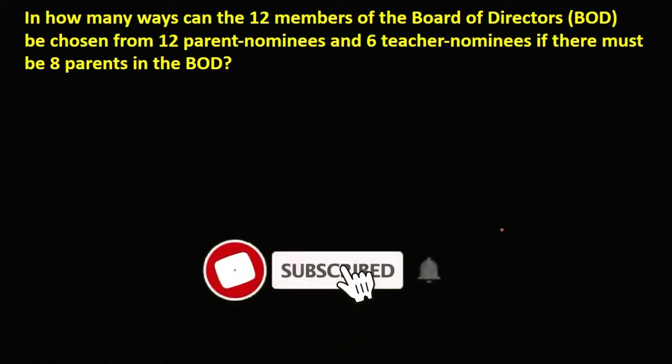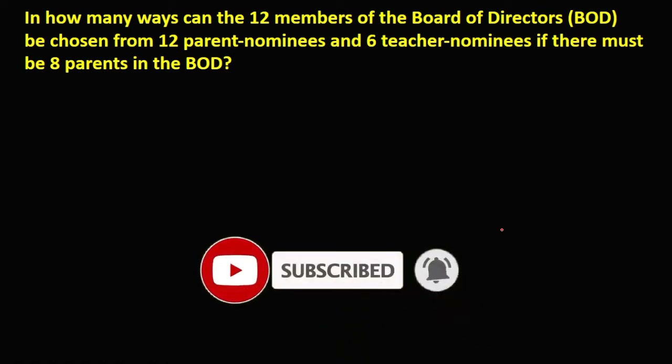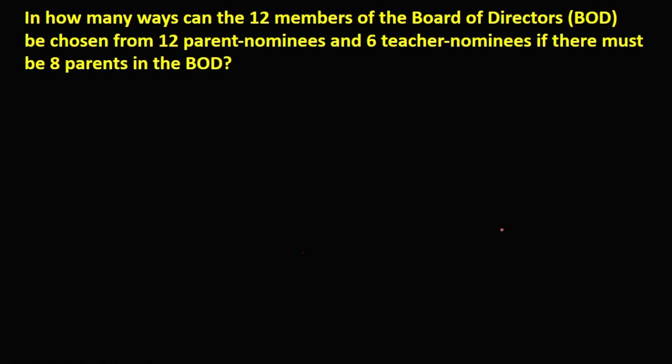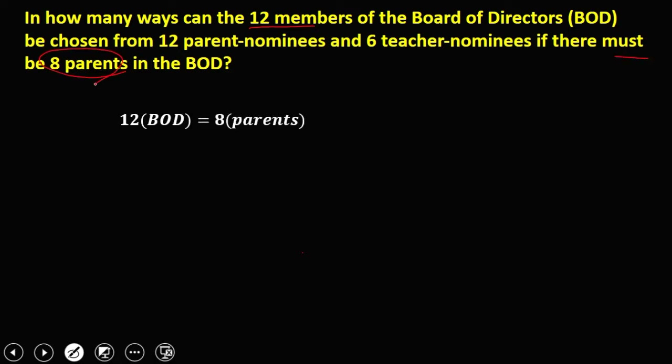Let's have this problem. In how many ways can the 12 members of the Board of Directors (BOD) be chosen from 12 parent nominees and 6 teacher nominees if there must be 8 parents in the BOD? Since we have 12 members and there must be 8 parents, the remaining 4 members are the teachers.